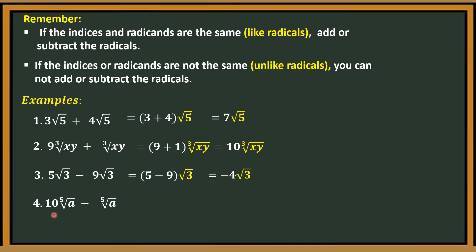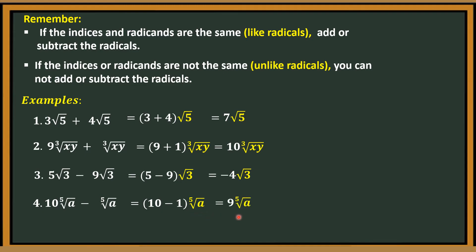Number 4: 10 fifth root of a minus fifth root of a. The index is the same — which is 5 — and the radicand is the same — which is a. Therefore, we can combine them. That is 10 minus 1, copy fifth root of a. 10 minus 1 is 9, so the answer is 9 fifth root of a.